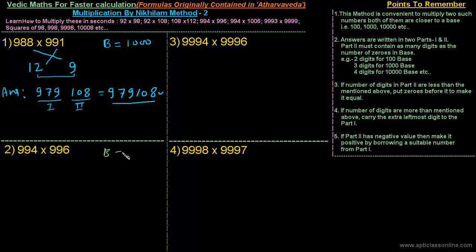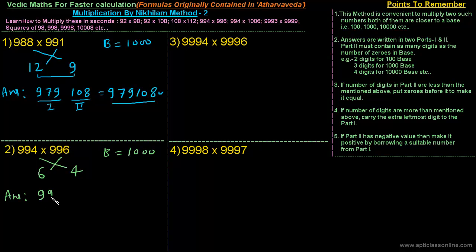Let's proceed to the next question: 994 × 996. First, the base for this calculation is one thousand. Next, 994 is six less than one thousand, and 996 is four less than one thousand. The answer in the first part is the difference: 994 minus 4, or 996 minus 6, which is 990. The second part is the multiplication of 6 and 4, that is 24.